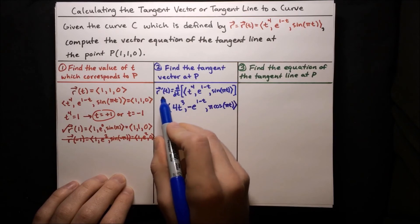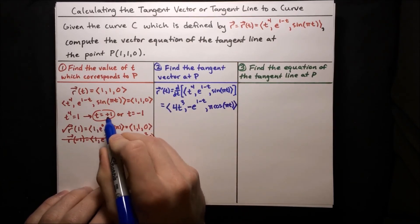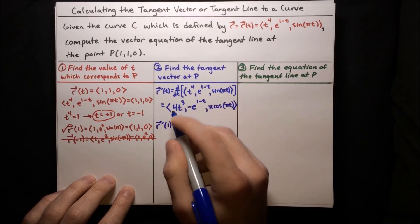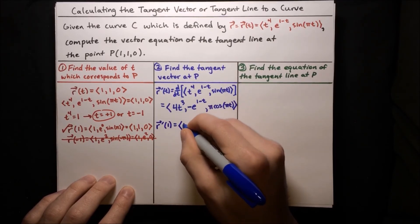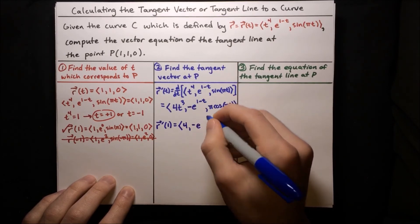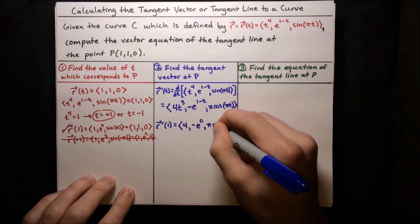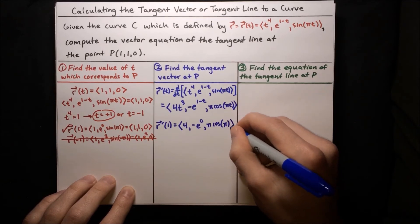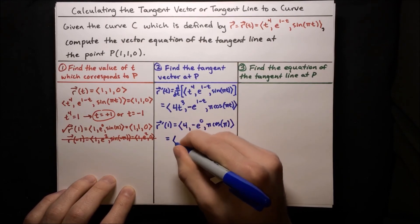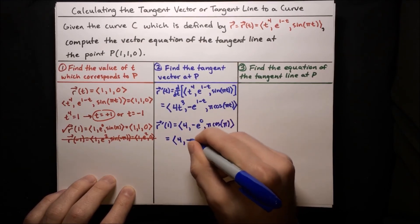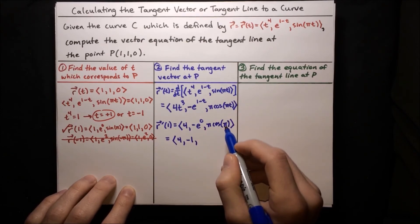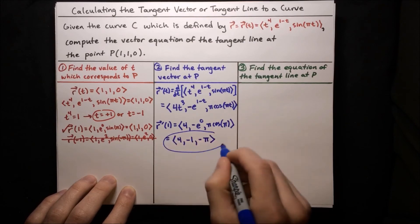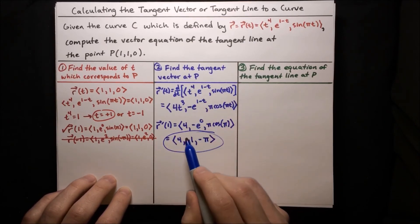Now we find this tangent vector at t equals positive one. R prime of positive one: four times one to the third is four; negative e to the one minus one is negative e to the zero, which is negative one; and pi cosine of pi times one is pi cosine of pi. Cosine of pi is negative one, so pi times negative one is negative pi. So r prime of one equals (4, negative one, negative pi). That is our tangent vector at the point P.